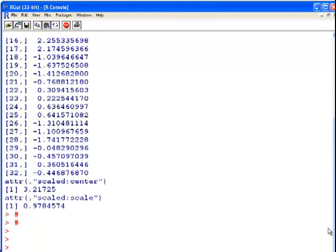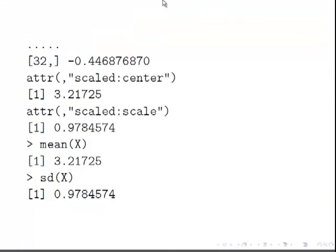For each of those values, it presents the standardized score. At the bottom here, it says 'centered' and 'scaled'. That is essentially just the mean and standard deviation of the data set.